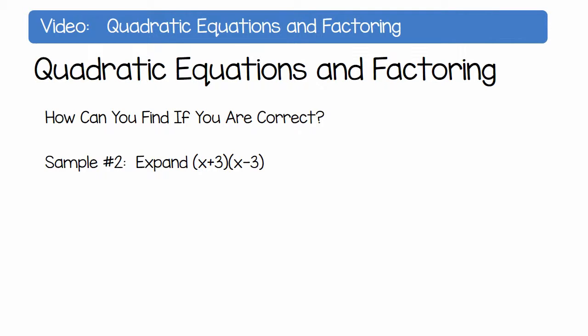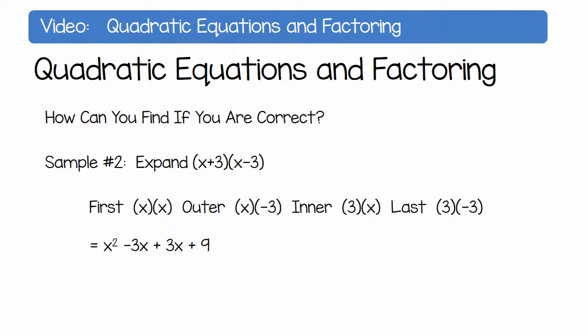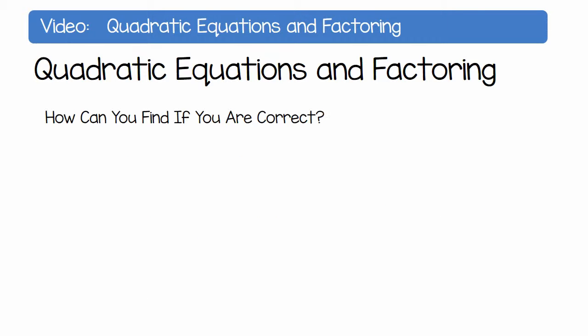Sample number 2, expand x plus 3 and x minus 3. First, x times x. Outer, x times negative 3. Inner, 3 times x. And last, 3 times negative 3. Which gives us x squared minus 3x plus 3x plus 9. This will result in the answer, x squared minus 9. Again, we are correct.